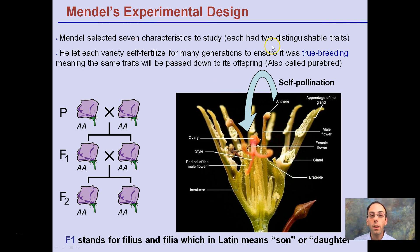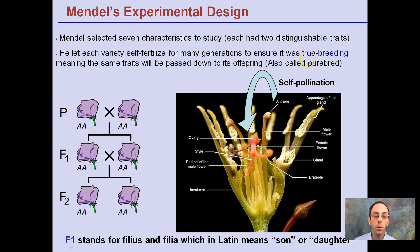His experimental design: he selected seven characteristics to study and each had two distinguishable traits. He let each variety self-fertilize — meaning the pollen from the same flower pollinates itself — and he developed what's called true breeding. True breeding means you take two parents, cross them together, get the same offspring, cross those together, get the same offspring. It shows consistency — it breeds true to type.